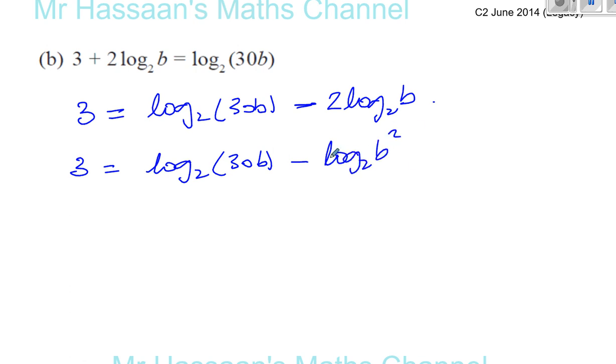So I can say log to the base 2 of 30B minus log to the base 2 of B squared. Okay, now once I've got log to the base 2 of something minus log to the base 2 of something, I've got rid of anything else that's multiplying it by using the power law. Then I can combine these together. Now, if they're subtracted, you're going to use the divisional law. So I'll have log to the base 2, I've got 3 on this side, log to the base 2, and I can say this is like 30B divided by B squared. Okay, as long as they're the same base, you can combine them together.